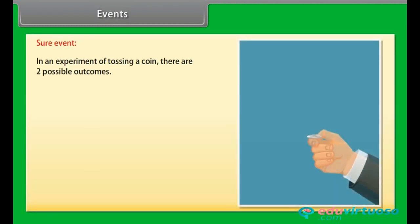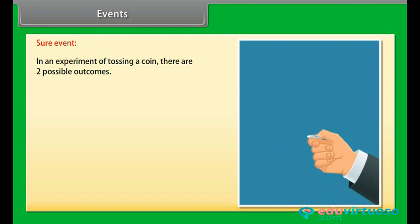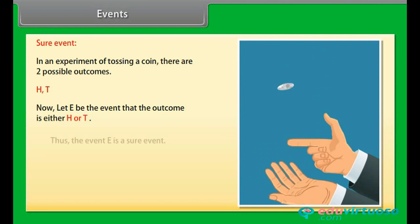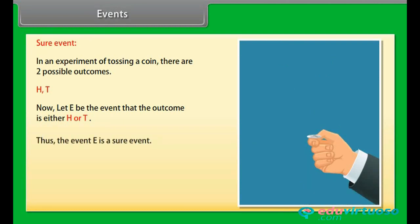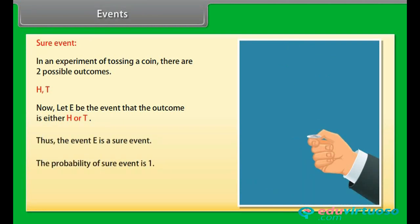Sure event: In an experiment of tossing a coin, there are 2 possible outcomes: H and T. Let E be the event that the outcome is either H or T. Thus, the event E is a sure event. The probability of a sure event is 1.